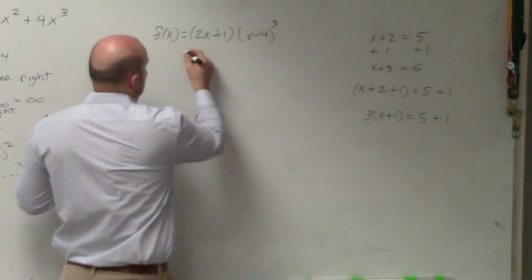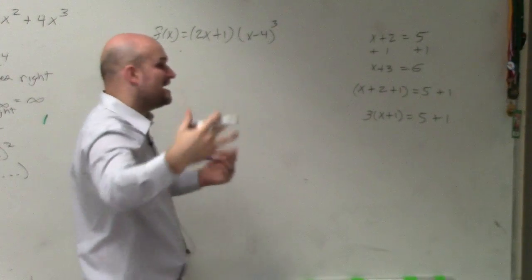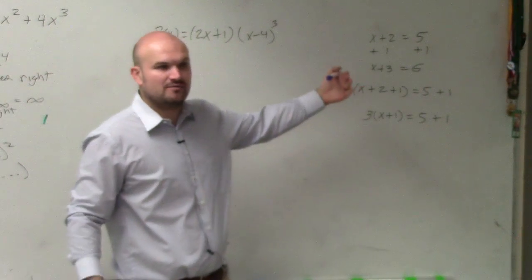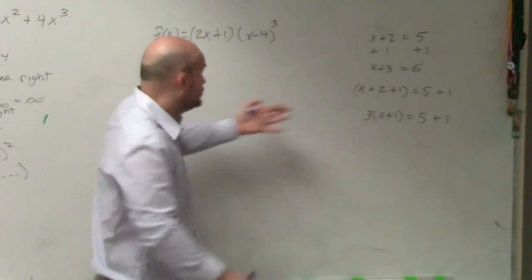So in reality, if I am multiplying x minus 4 times itself three times, what's the highest power I'm going to get when I multiply those out? x cubed.